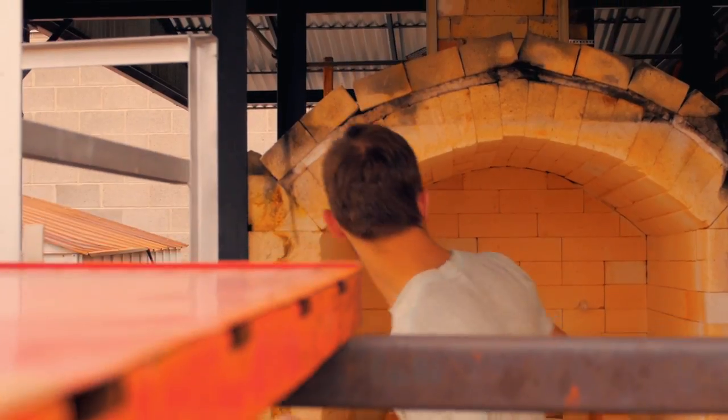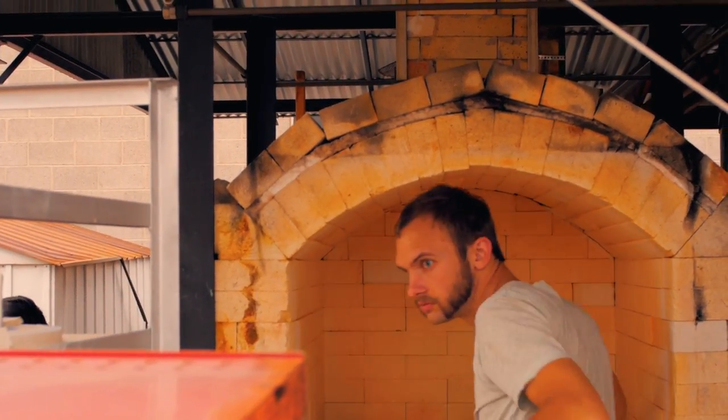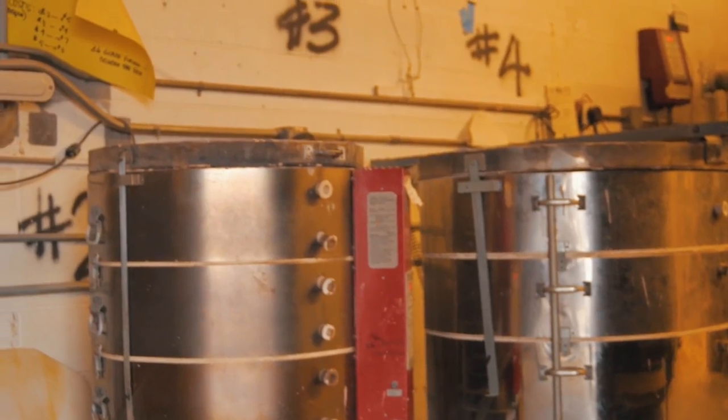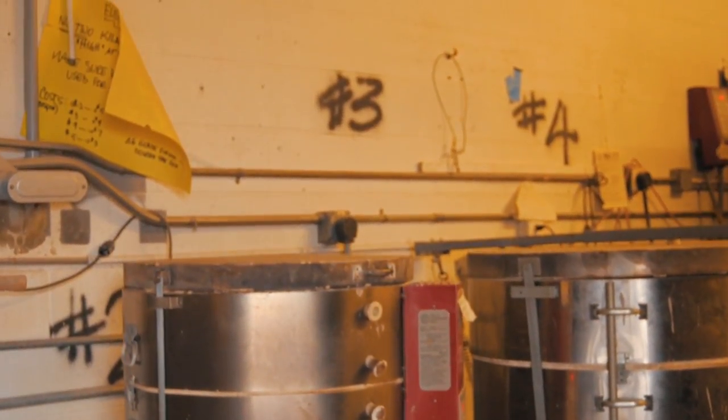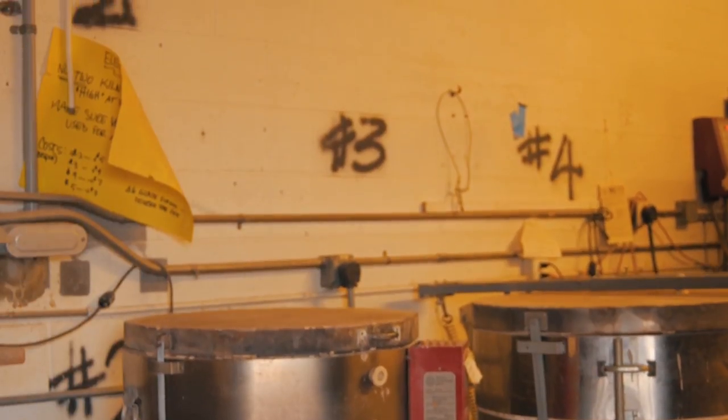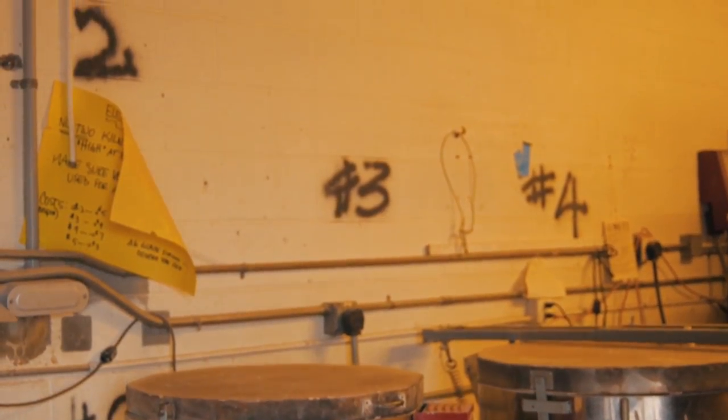Ceramic artists use a kiln to fire their art pieces. A kiln is a thermally insulated chamber, a type of oven, that produces temperatures sufficient to complete some process such as hardening, drying, or chemical changes.